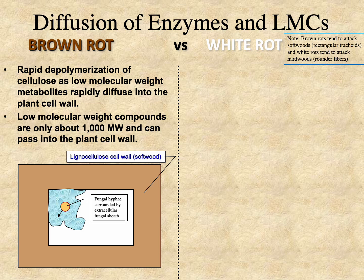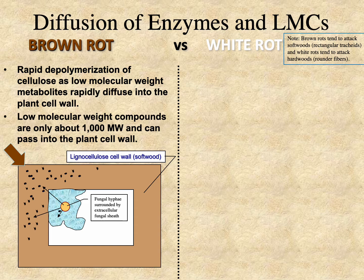Brown rots have rapid depolymerization of the cell wall. The fungus is surrounded by the ECM, or extracellular matrix. The low molecular weight compounds are secreted by the fungus and diffuse out into the cell wall. Jeff Daniel has data showing they'll go well into the middle lamella and even into other surrounding cells. Once this occurs, depolymerization of that cell wall starts to occur.